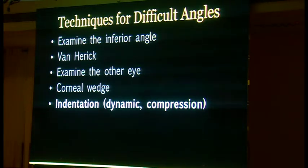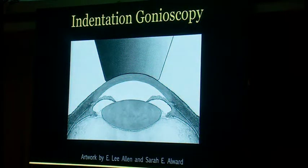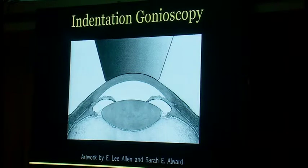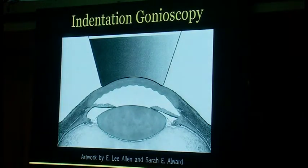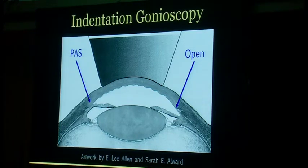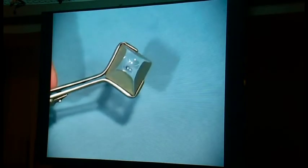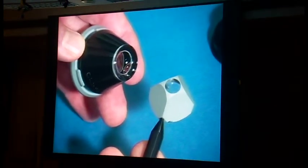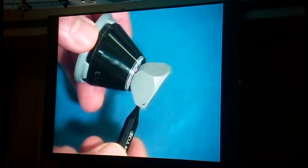Even more helpful for me is indentation gonioscopy — people also call this dynamic or compression gonioscopy. The idea is that you have an eye where the iris is forward and you don't know if the eye is in pupillary block or has synechiae. You can push with a lens that has a small area of contact to drive the iris back. You might find a synechiae on one side while the other side opens — that side just had pupillary block and would do well with laser iridotomy. The Zeiss lens isn't made anymore, but the concept is to use a lens with a small contact area like a Posner or Sussman. Compared to a Goldmann lens, the area of contact is very small — a Goldmann lens when you push would just compress the angle.